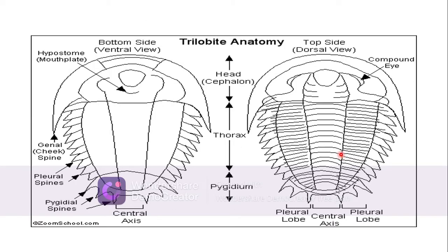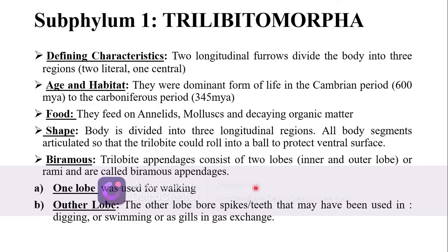The Cephalon region is the head region, the second region is the thorax region, and the final region is the pygidium. So the body was divided into three regions: the head, the thorax, and the pygidium. This was the anatomy of the organism.